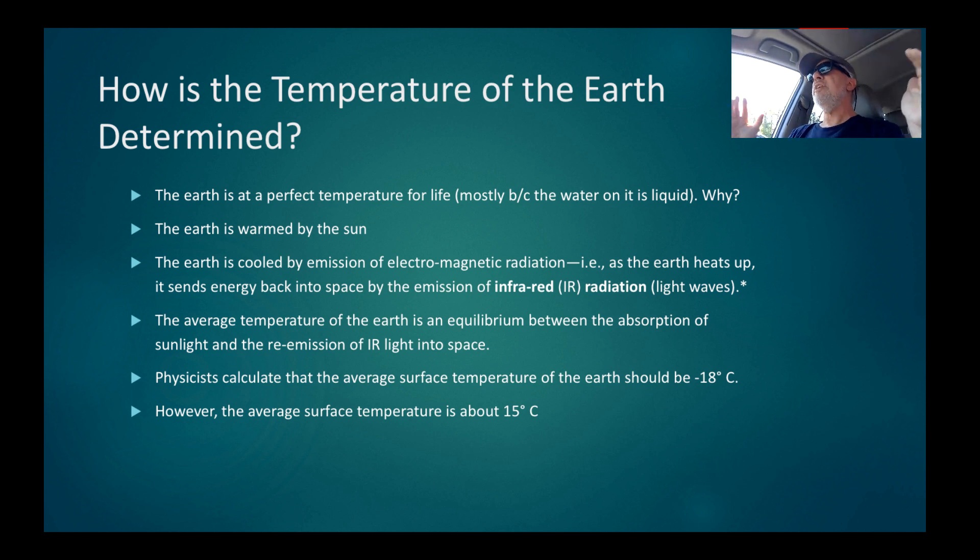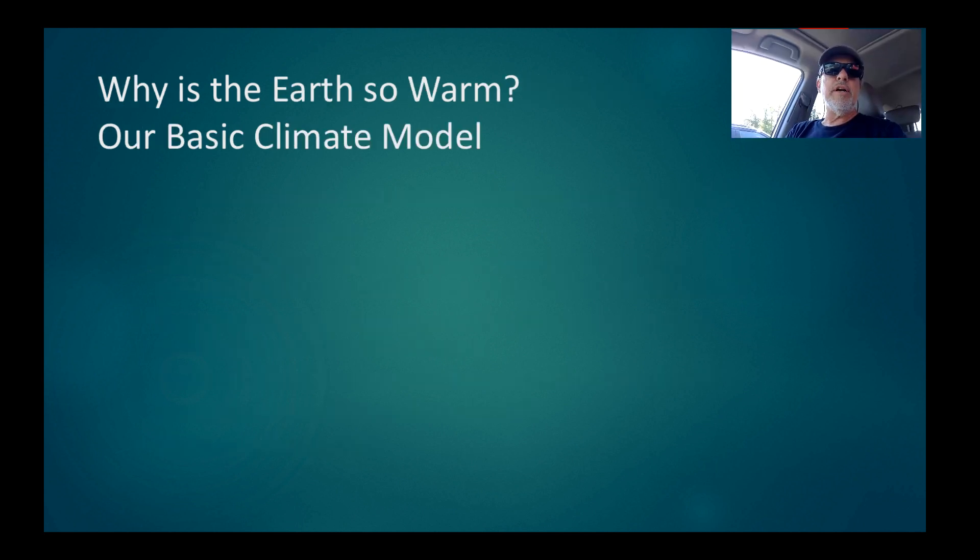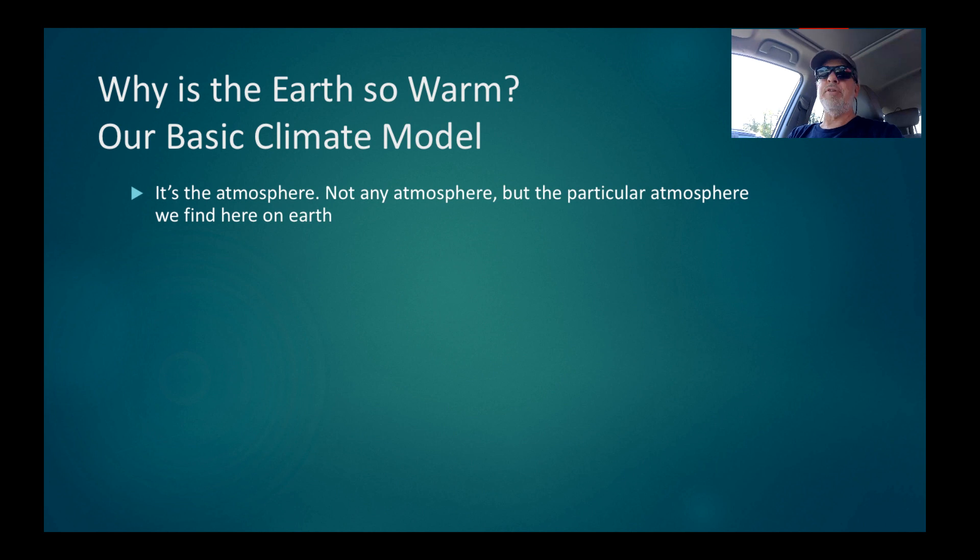However, the average surface temperature is about 15 degrees centigrade. So it's 33 degrees centigrade warmer. So why is there a difference of 33 degrees centigrade? Why is the Earth so warm? Here's our basic climate model: it's the atmosphere. And not just any atmosphere, but the particular atmosphere that we find here on Earth. If you want to know an ecosystem service that the atmosphere performs, it's providing a climate for the Earth as a whole that we can survive in.